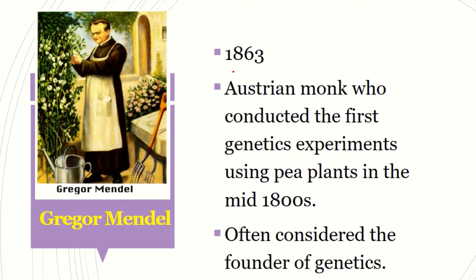Then this is another pioneer, in 1863, called Gregor Mendel. We usually call him the founder or the father of genetics because he was able to conduct the first genetic experiments using pea plants in the 1800s, and he was able to define inheritance — how traits are inherited — using pea plants.